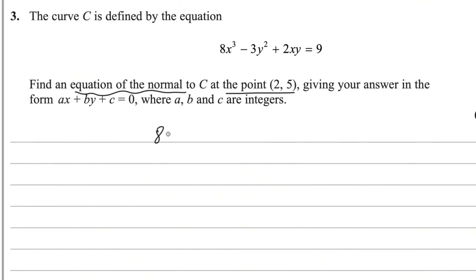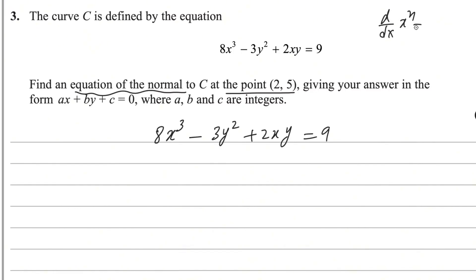So you need to differentiate 8x³ - 3y² + 2xy = 9 with respect to x. For the first term, by the power rule — derivative of xⁿ is nxⁿ⁻¹ — this power multiplies by 8, giving 24, and we reduce the power by 1, so the derivative of 8x³ is 24x².